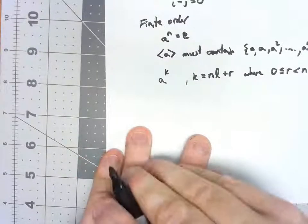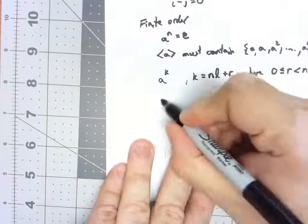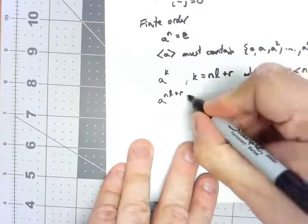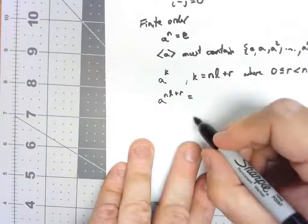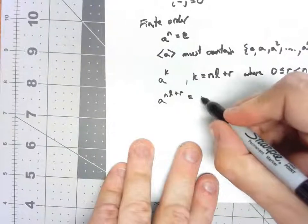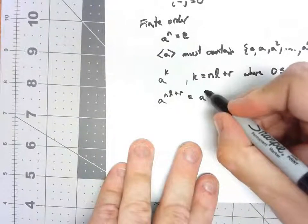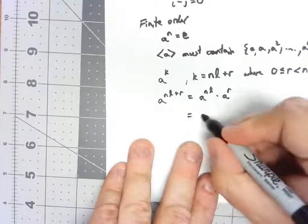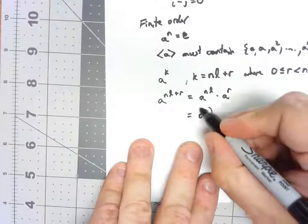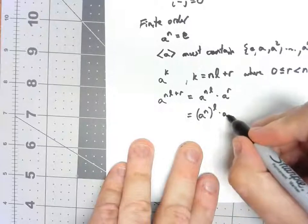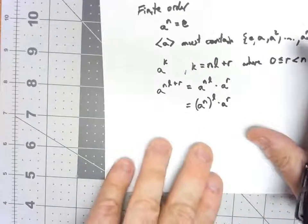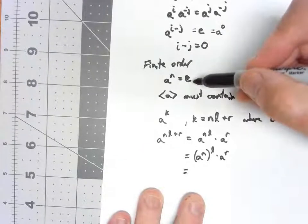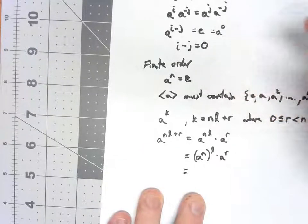This is called the division algorithm, but really it's the way long division works. So let's think about that. If I have A to the NL plus R, that means that we have A to the NL times A to the R, which I can even break down further: A to the N to the L power times A to the R. But A to the N, by definition of order, that has to be E.